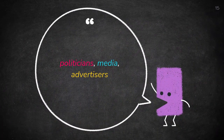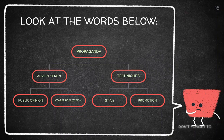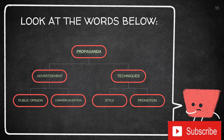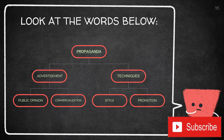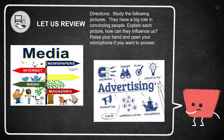Remember that this topic is related to politicians, media, and advertisers. Today you will learn that propaganda has two words under it: advertisement and techniques. Under advertisement we have public opinion and commercialization; under techniques we have style and promotion. Today you will learn how these words relate to what we are going to discuss.